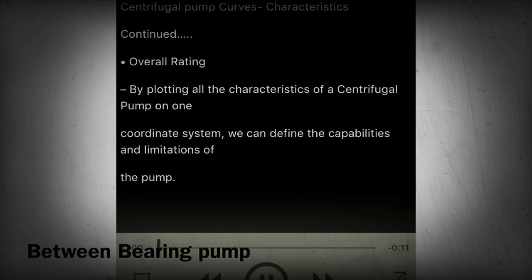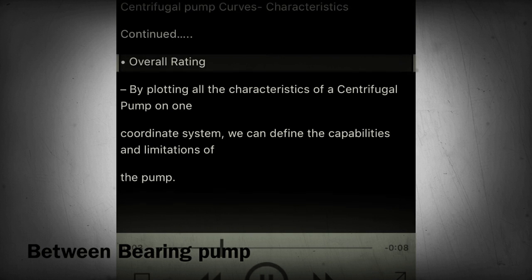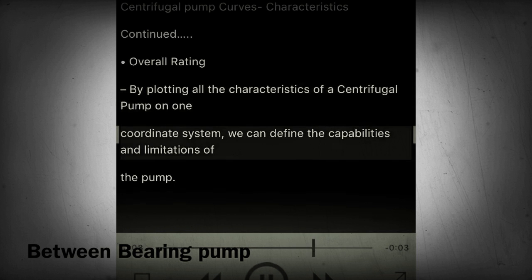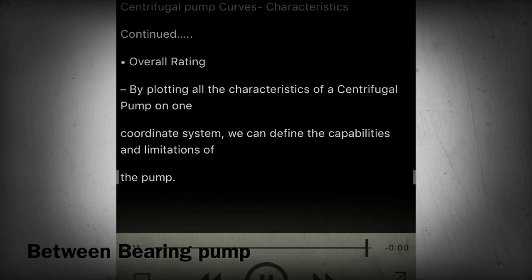Section 27 - Overall rating. By plotting all the characteristics of a centrifugal pump on one coordinate system, we can define the capabilities and limitations of the pump.